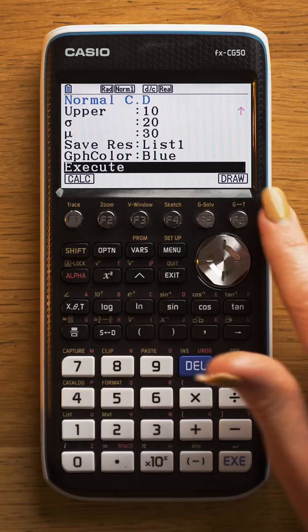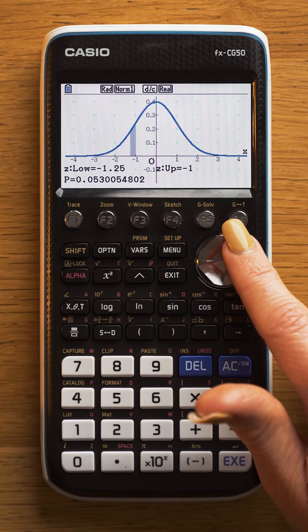Now here you're going to have two options. You can draw the graph here, and it will draw the standardized graph for you, or you can do the calculation here, and it will give you the probability and the corresponding Z values.